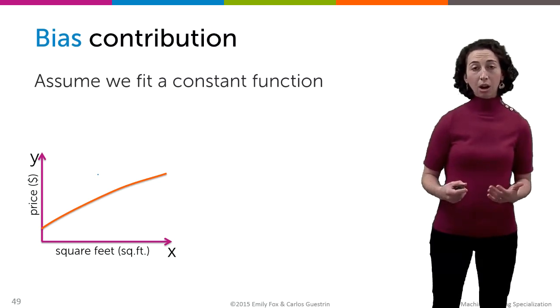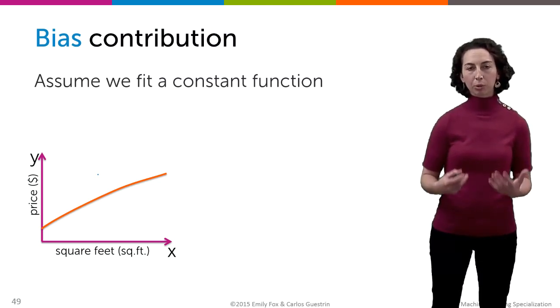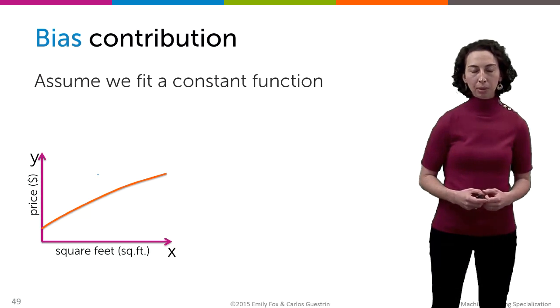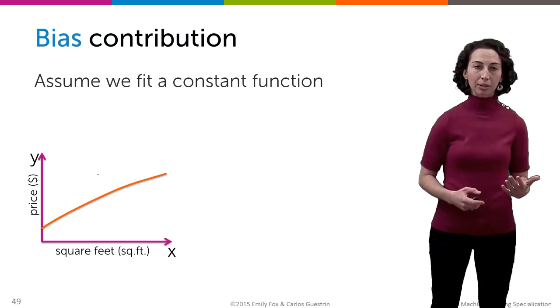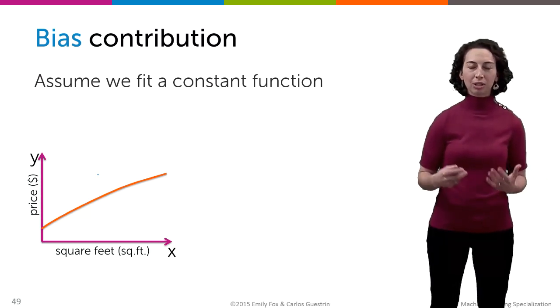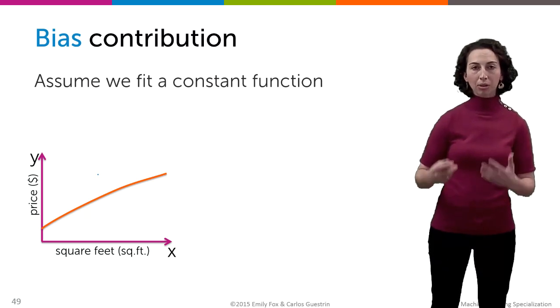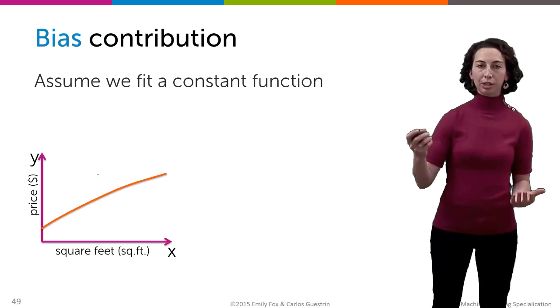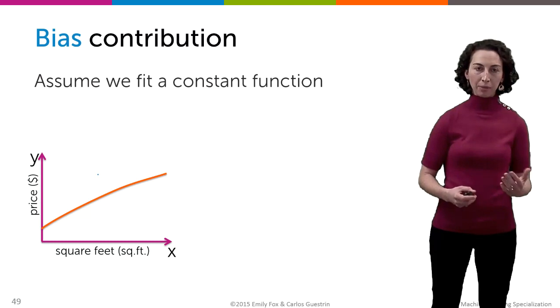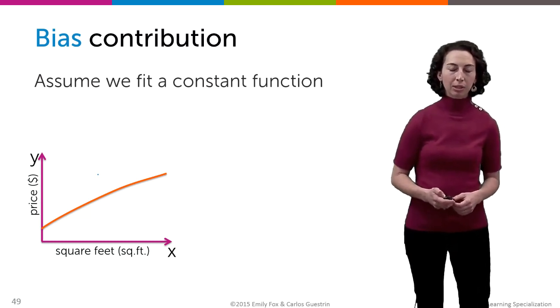Okay. So the things that we can control are bias and variance. So we're going to focus quite heavily on those two terms. So let's start by talking about bias. And this is basically just an assessment of how well my model can fit the true relationship between x and y.